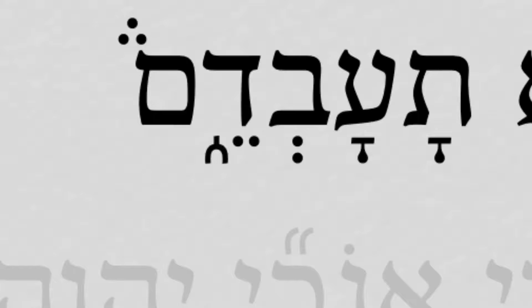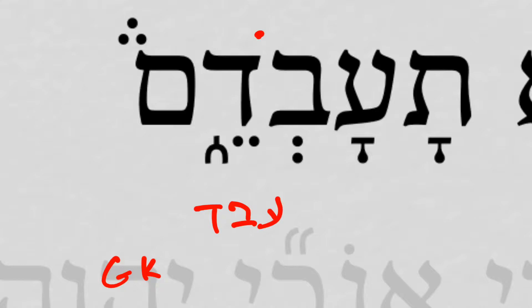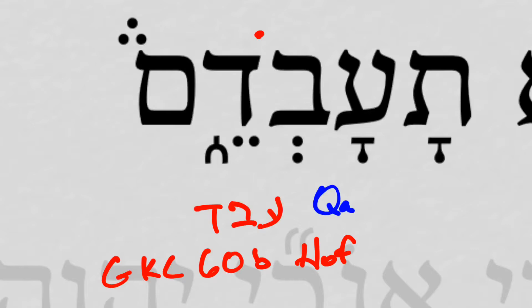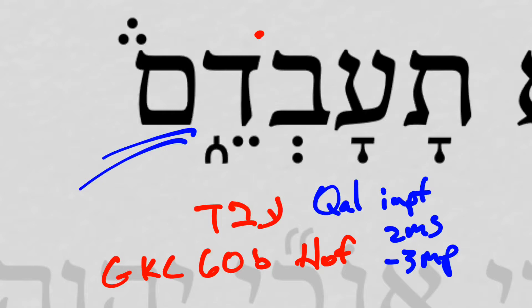We can take a look at ta'avadeim. The easy part is that this comes from the root letters ayin, beit, dalet. The tricky part is the stem. We would expect, if this were a kal, to have a holam, but we don't have that. Gesenius wonders in GKC 60b whether this could be a hofal — that is, 'do not allow oneself to serve.' But perhaps the sense of a kal with a strange spelling may be better. In any case, it is an imperfect 2ms and it's negative — you shall not serve — and then there's a 3mp pronominal suffix: you shall not serve them, referring back to the images.